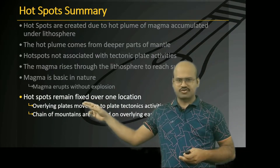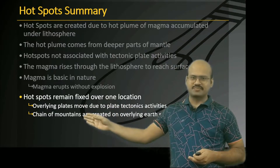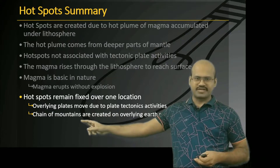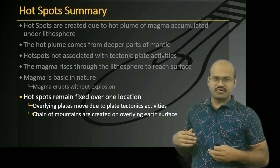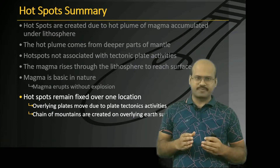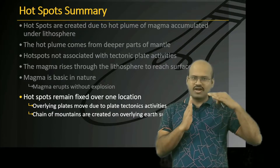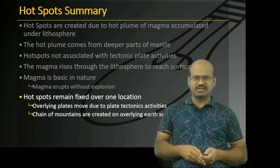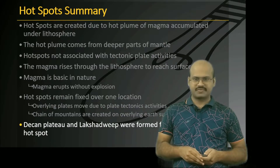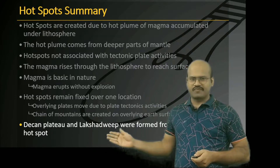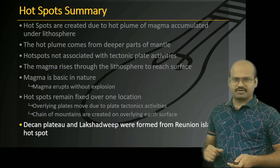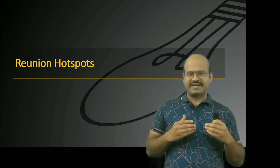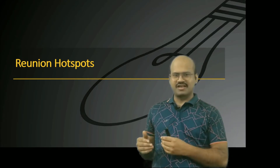Hotspots remain fixed over one location while overlying plates move due to plate tectonic activities, creating a chain of mountains on the overlying Earth surface. The Deccan Plateau and Lakshadweep were formed from the Reunion Island hotspot. Let's see how the Reunion hotspot created the Deccan Plateau as well as the Lakshadweep islands.